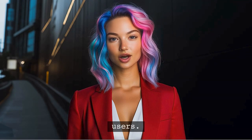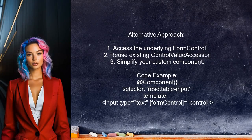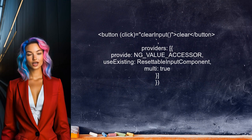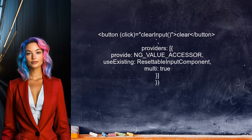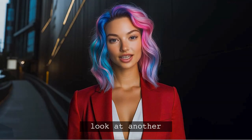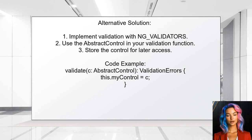Let's look at the answers provided by other users. An alternative approach involves accessing the underlying form control and control value accessor directly — this allows you to reuse existing form control instances, simplifying your custom component implementation. Another approach involves implementing validation using the validator interface. When you create a validation function, the abstract control is passed in early, allowing you to store it for later use.